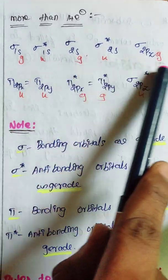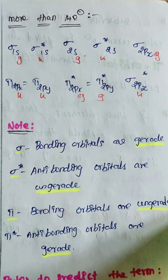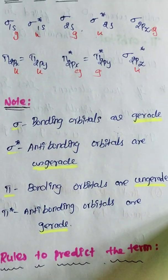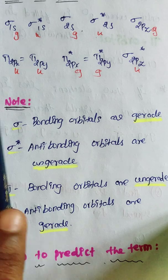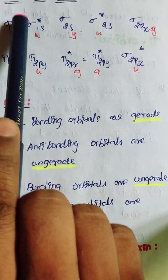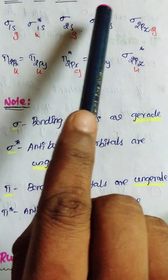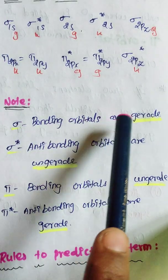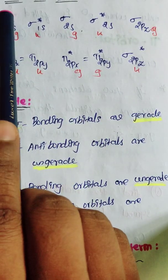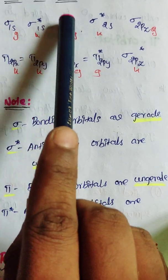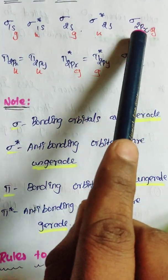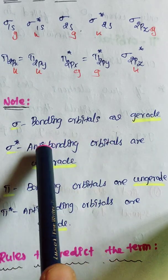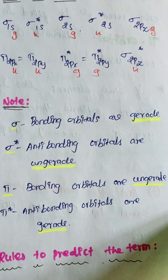When we mention gerade and ungerade, sigma bonding orbitals are labeled gerade. So sigma bonding orbitals get the gerade (g) label. Where sigma star, or anti-bonding orbitals, are present, we will mention ungerade. So anti-bonding sigma orbitals are ungerade.